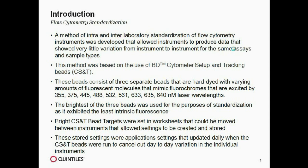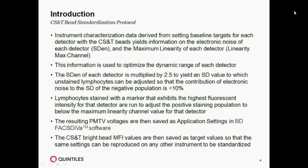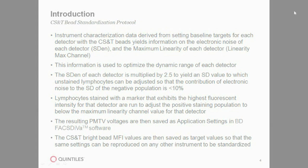How do we set the positive in the same place every day? One of the nice things about running CS&T beads is that the software characterizes the instrument — it tells you a lot about what's going on. The two values we use to standardize are: how much electronic noise there is in each detector, and what's the maximum linearity of each detector. So we're measuring how much electronic noise at the low end contributes to the CV of the negative population, and how bright something can be in that detector before it's off scale and in a non-linear region where compensation is no longer accurate.